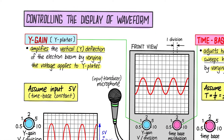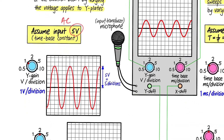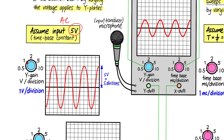Next, let's go to the Y gain. Once you connect the voltage source to the CRO and want to amplify the vertical deflection, that's where you adjust your Y gain. Let's assume we have an AC input with a peak voltage of 5 volts. If we set the Y gain to 1 volt per division, then 5 volts divided by 1 volt per division gives 5 divisions. So the wave will have an amplitude of 5 divisions. The frequency will remain constant — 4 divisions equals one complete wave.